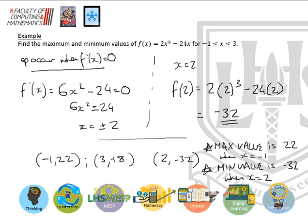So again, looking at the closed intervals, there are only two possibilities of where the maximum values are. It's either at each end of the given range, so you're calculating the y value there. Then you are finding your stationary points, finding the y value of your stationary points, so that you can compare the y coordinates and make a statement regarding the maximum and minimum values.